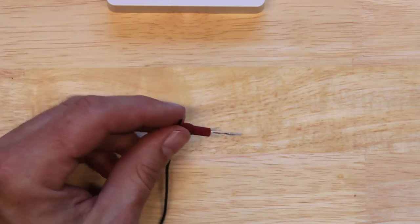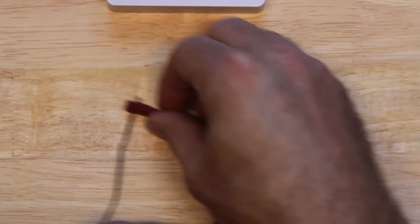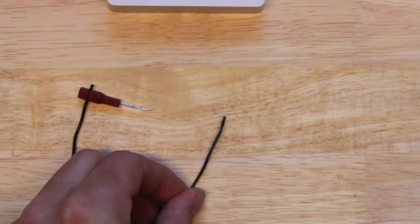So go ahead and give it a gentle tug just to make sure that it's in there nice and tight. And go ahead and repeat all those steps for the other side of the reed sensor and then we'll be ready to install into the doorbell.